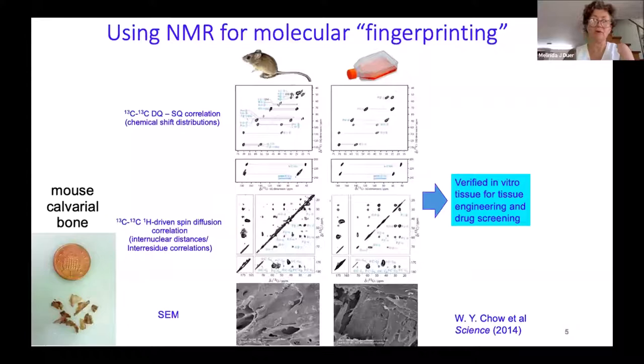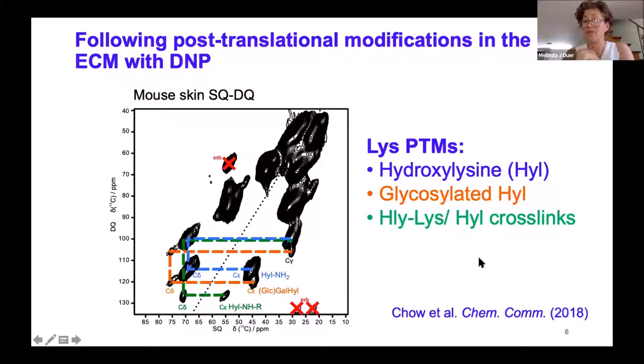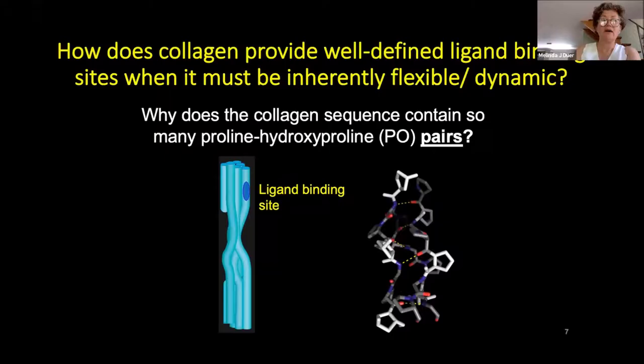With the advent of DNP, you can see even very low concentration species in the extracellular matrix. We're looking at the very low abundance post-translational modifications of lysine in collagen, which are essential both for cell signaling and, in the case of crosslinks between hydroxylysines, for the mechanical stability of the extracellular matrix. With those kinds of in vivo and in vitro models available, we were then able to start answering important biological questions around the extracellular matrix and its function.